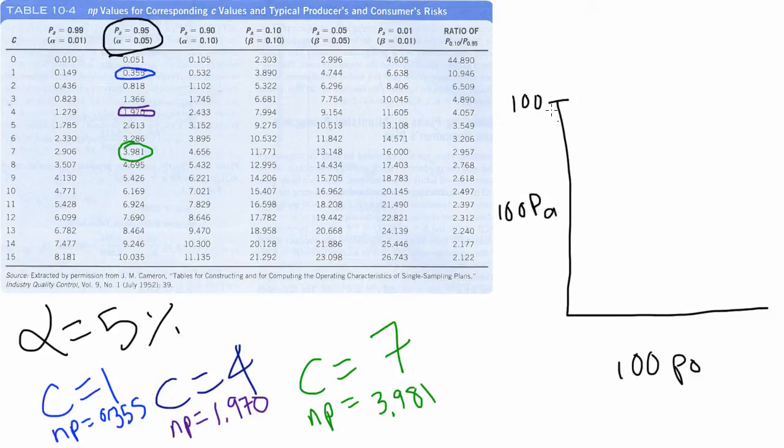Now that we've done that, we can divide np by p, which in this case is our AQL, our acceptance quality limit. And let's say our AQL in this case is 1.2%.